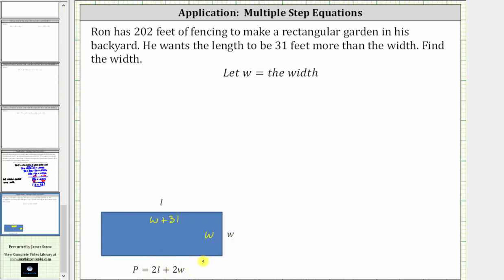Which means for Ron's garden, the perimeter is equal to two times the quantity w plus 31 plus two times w, which is just two w. And this must equal the total amount of fencing, which is 202 feet. And now if we solve this equation for w, we can determine the width.